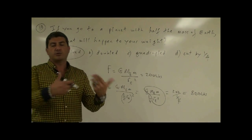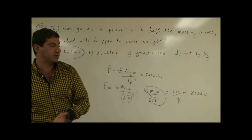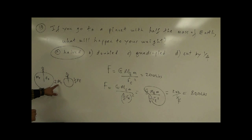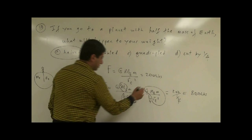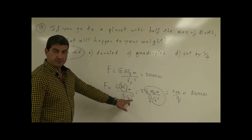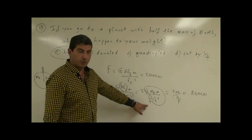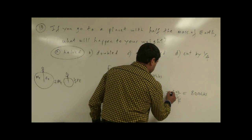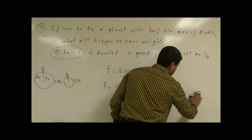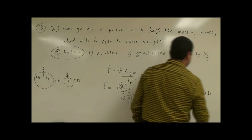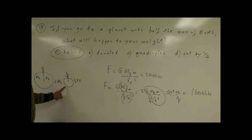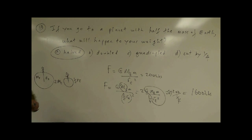What if you go to a planet that has twice the mass of Earth and half its radius? You're going to weigh a lot there. Twice the mass means I put a two on top, and half the radius squared gives one-fourth on the bottom. So you have two over one-fourth, which is eight times more than you do on Earth. On that planet you will weigh eight times 200, which is 1,600 pounds. So on a planet that's twice as heavy as the Earth and half its radius, you weigh eight times as much as on Earth.